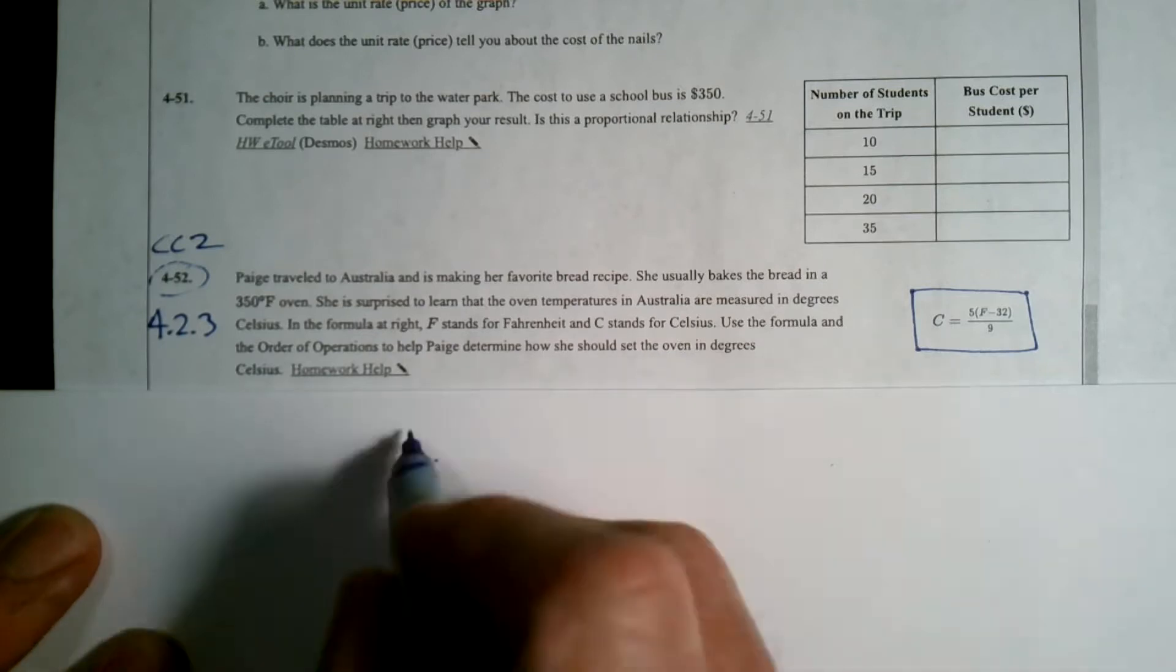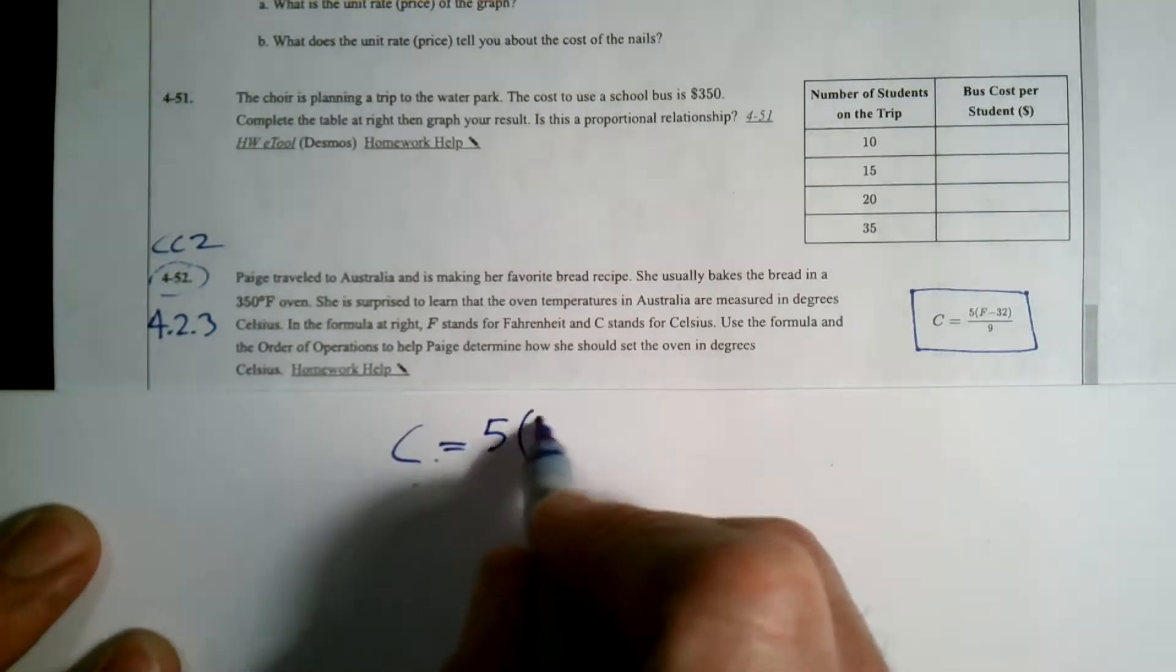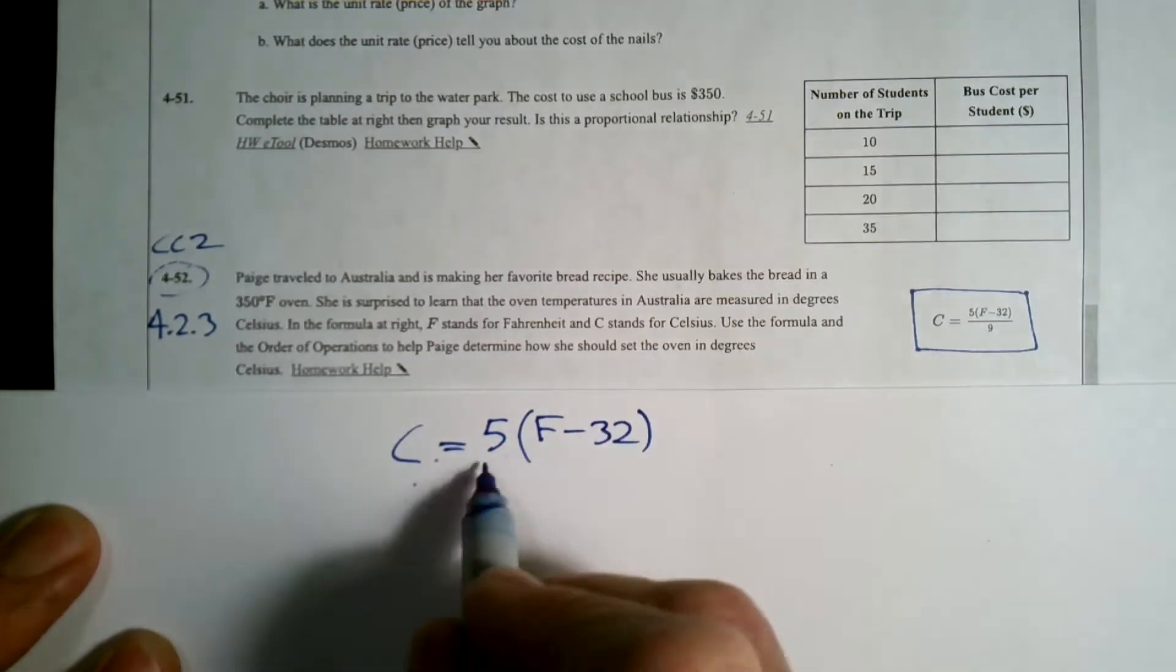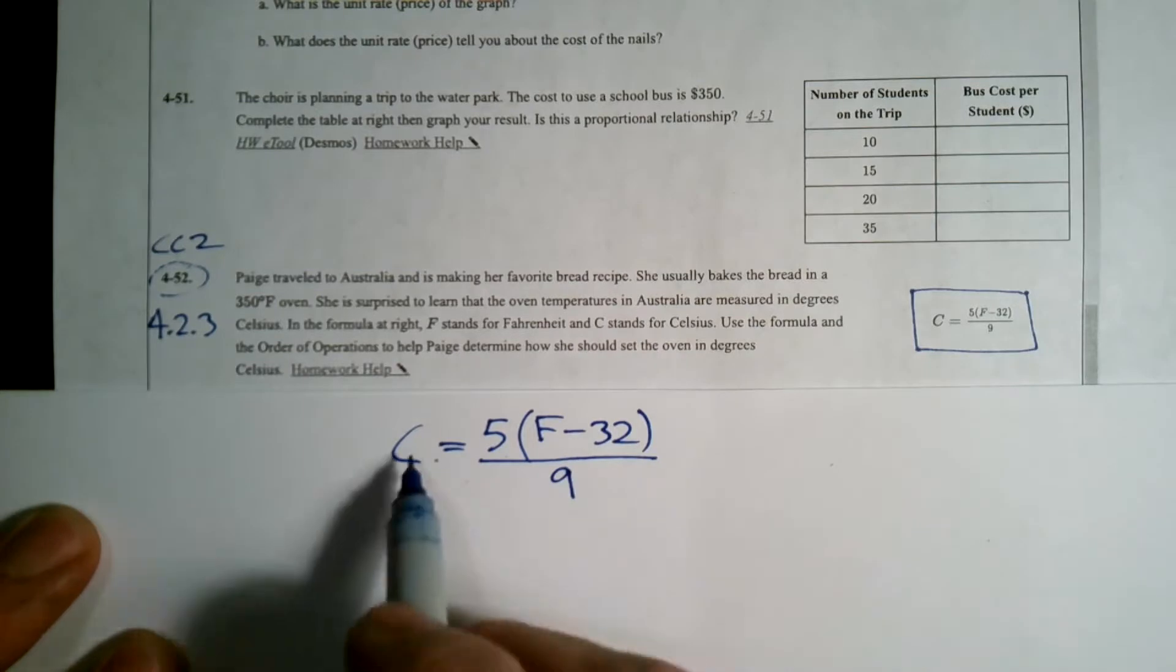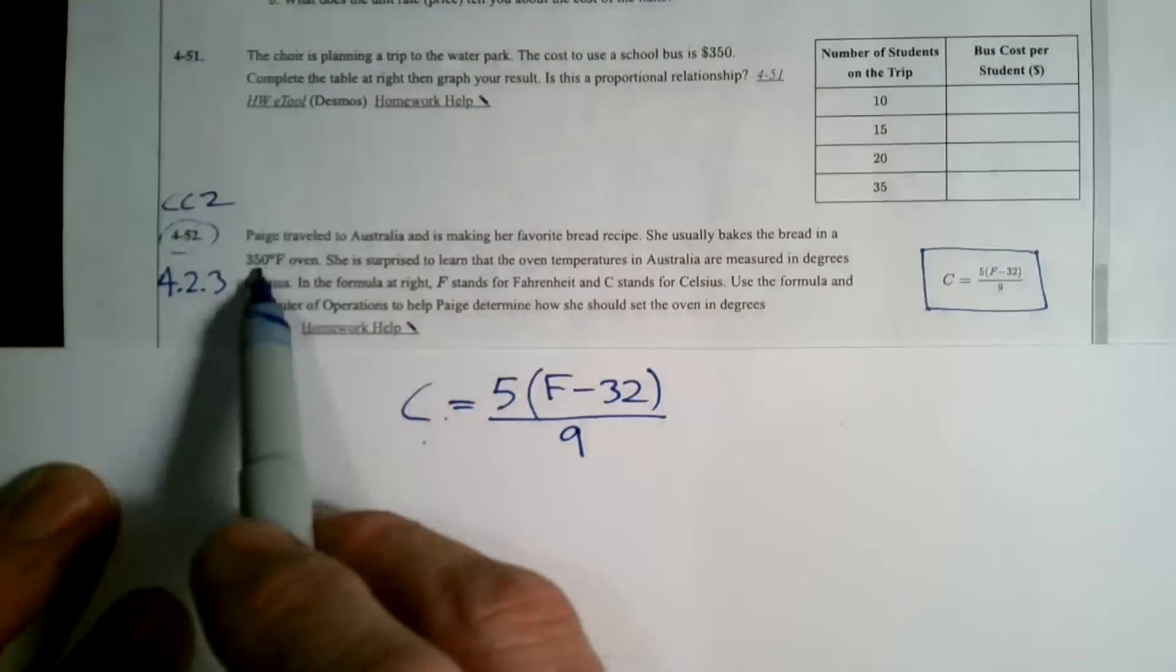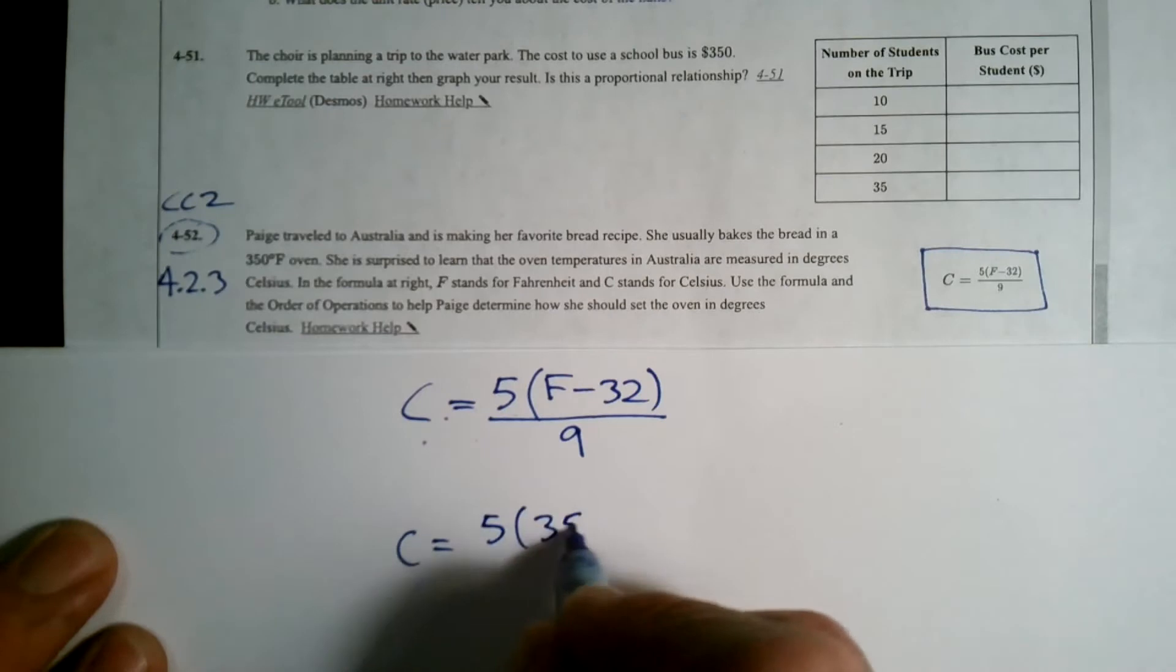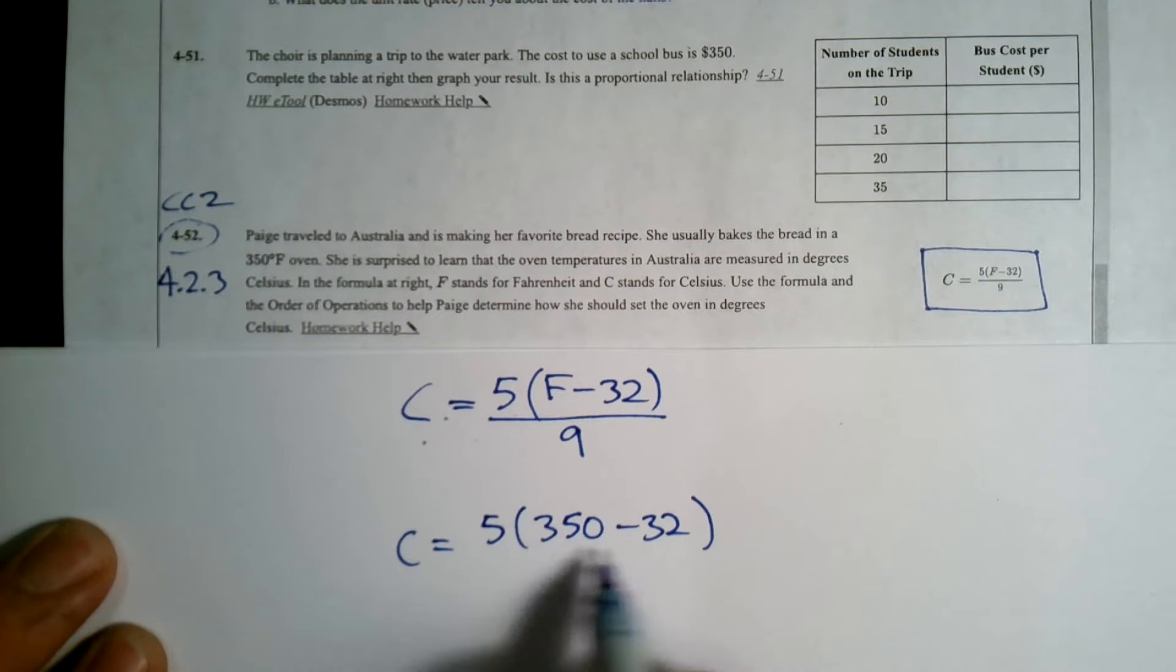So I'm going to rewrite our formula. It's Celsius equals 5 times the quantity Fahrenheit minus 32, and then all of that divided by 9. Okay, so that's our formula. We want to find Celsius and they given us the Fahrenheit as 350. So we're going to do 5 times the quantity 350 minus 32, all divided by 9.